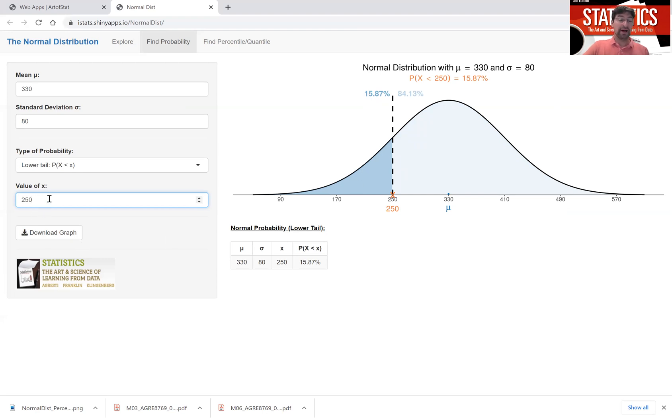However, suppose you want to figure out what's the probability of the talk time less than 230 minutes. And for this you need the app to figure out the probability. And it's shown here, the probability of being less than 230 is equal to 10.6%. This is the area under the curve here.